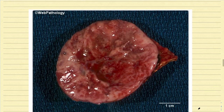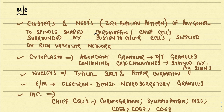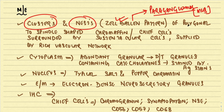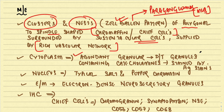Larger pheochromocytomas can show areas of hemorrhage and necrosis. Microscopically, pheochromocytoma shows a characteristic zellballen pattern, where tumors are present in clusters and nests. This pattern is present in all kinds of paragangliomas — a very important exam MCQ. The clusters are composed of polygonal to spindle-shaped chromaffin or chief cells surrounded by sustentacular cells, supplied by a rich vascular network. The cytoplasm is abundant and granular due to catecholamine-containing granules, best demonstrated by silver stains.